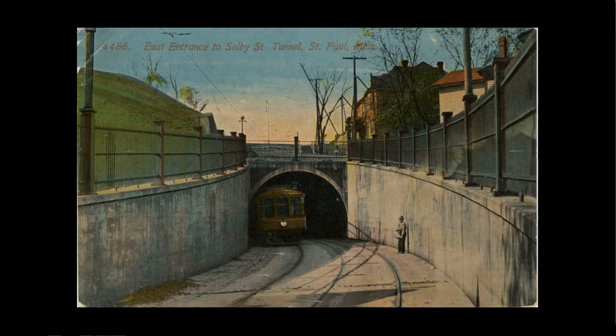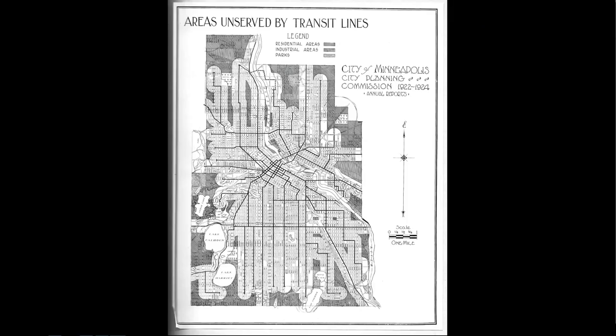Here is the Selby Tunnel. If you go over there today this is all still there. It was built to get rid of the last remnant of the cable car line going up and down that steep hill, cutting the grade from 16% down to 7%. Quite a public works job. The retaining wall above the tunnel on the upper left is still there — you can walk right up and see it.